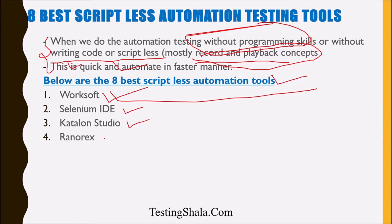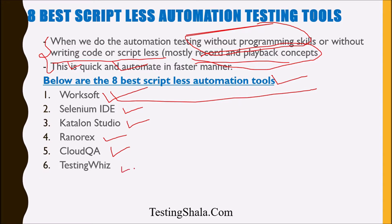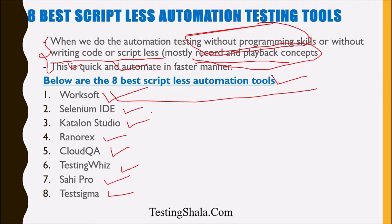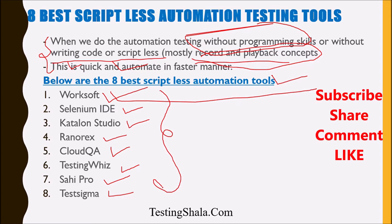The 4th tool is Ranorex, 5th is CloudQA, 6th is TestingWhiz, 7th is Cypressor, and 8th is Test Sigma. These are the eight very important scriptless test automation tools. If you are already performing POCs, you can identify these eight tools and do a POC on them.